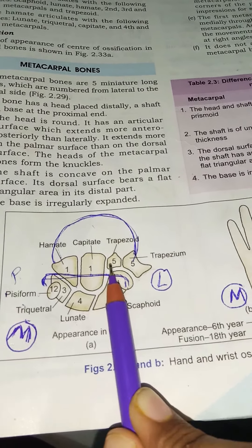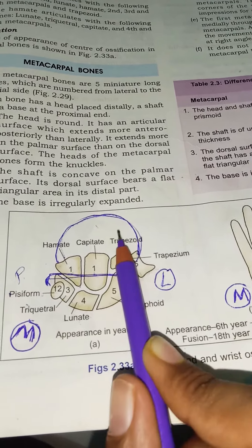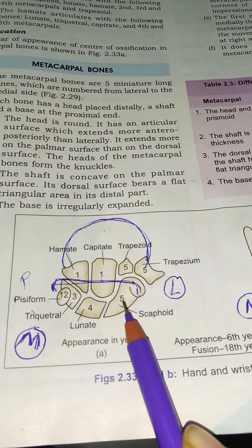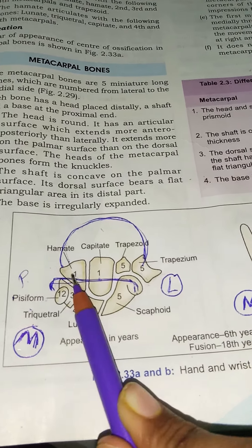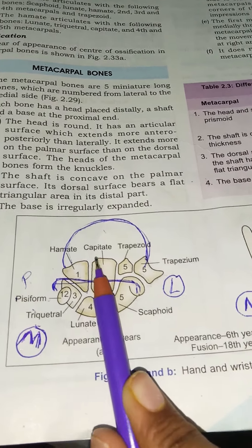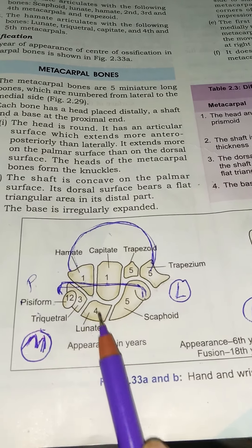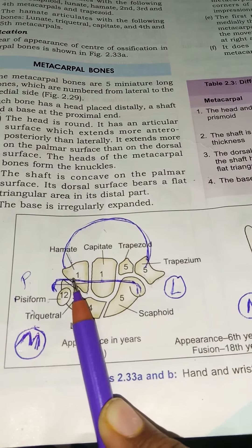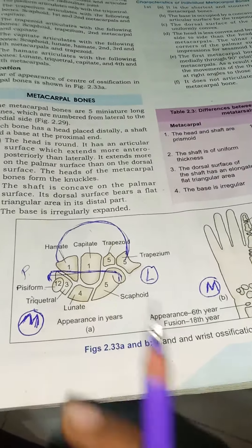The trapezoid articulates with scaphoid, trapezium, second metacarpal joint, and capitate. The capitate articulates with scaphoid, lunate, hamate, second, third, and fourth metacarpal joints, and trapezoid. The hamate articulates with lunate, triquetral, capitate, and fourth and fifth metacarpal joints.